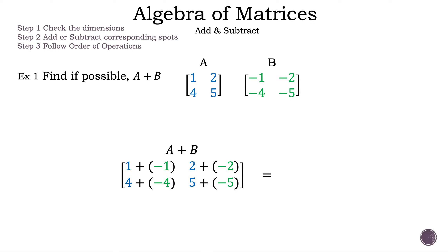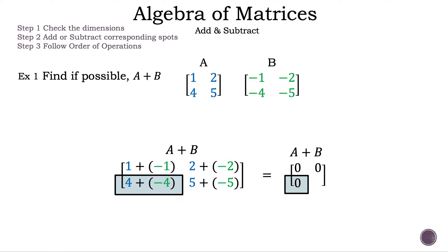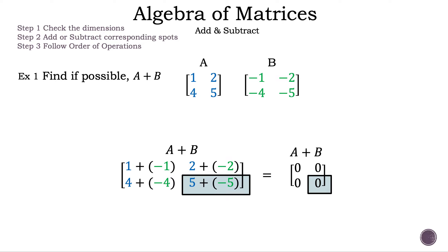Now let's simplify by adding to get our resultant matrix. 1 plus negative 1 is 0. 2 plus negative 2 is also 0. 4 plus negative 4 is also 0. And 5 plus negative 5 is also 0. Since we have all zeros in our resultant matrix, we have a zero matrix, and that is the answer for example 1.